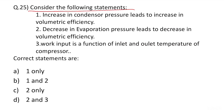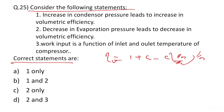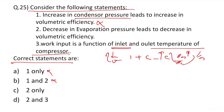Question 25: Consider the following statements. Statement 1: Increase in condenser pressure leads to increase in volumetric efficiency. Volumetric efficiency = 1 + C − C·(P_higher/P_lower)^(1/N). If condenser pressure increases, the ratio increases, so volumetric efficiency decreases — Statement 1 is wrong. Statement 2 is correct. Statement 3: Work input is only a function of inlet temperature — this is also wrong. Correct answer is C.